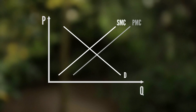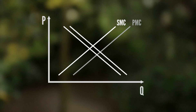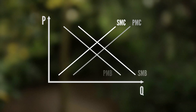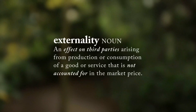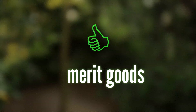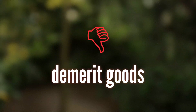Demand, in the same way, is renamed private marginal benefits and runs in parallel with a social benefits curve. These twin curves come into play when there is an externality in the market, an effect on third parties arising from production or consumption of that good or service. Merit goods have positive externalities and demerit goods have negative ones.